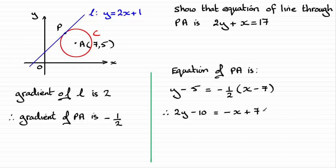And then I can see this is shaping up for this if I just add x to both sides here, and add 10 to both sides. That's going to lead me in to what we have to show. 2y plus x equals the 10 plus the 7, which is the 17.